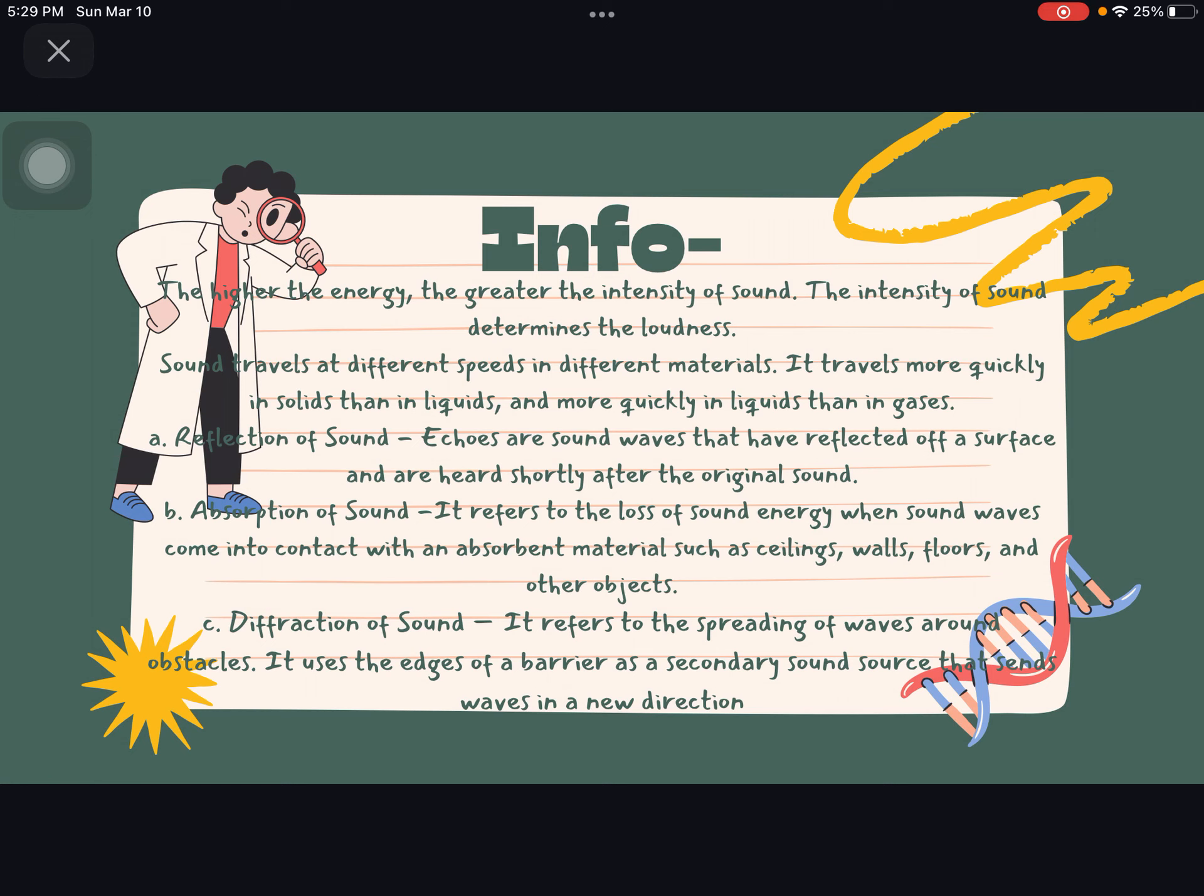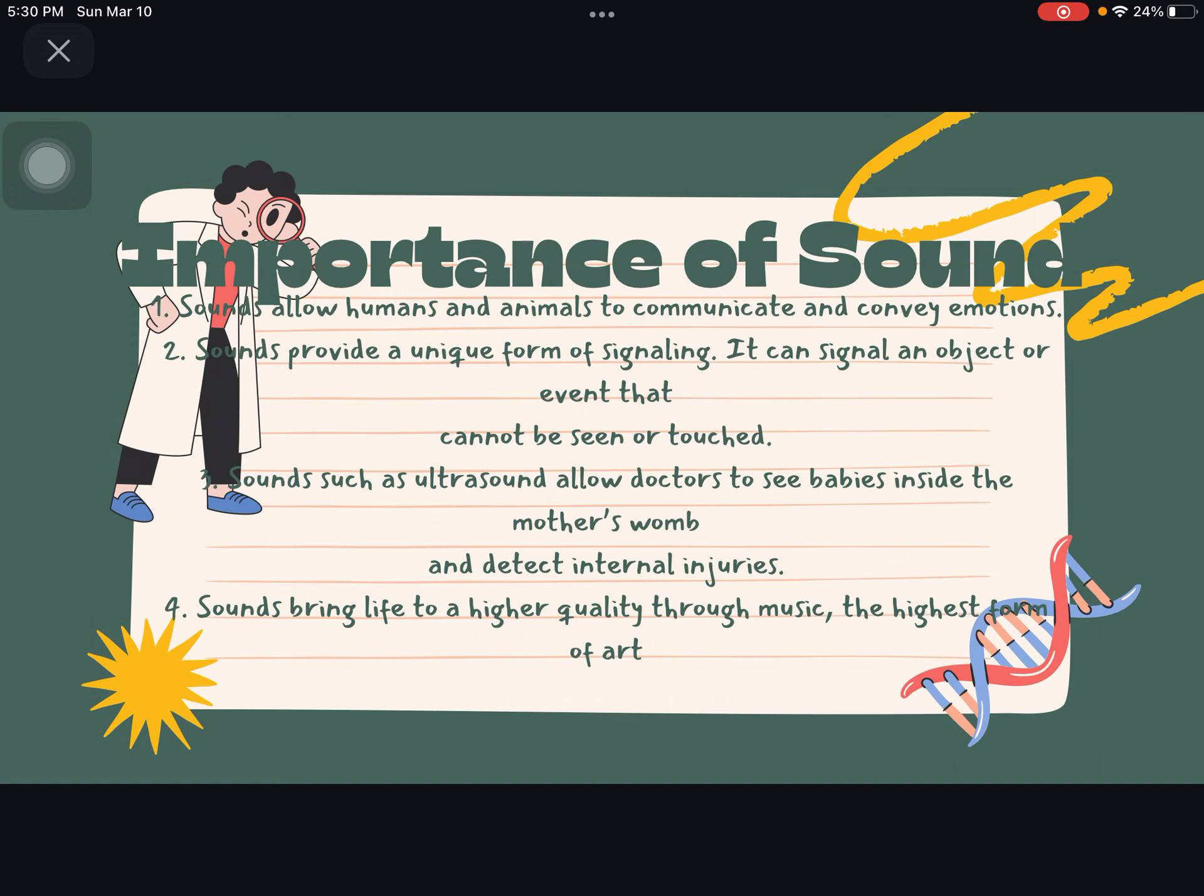C. Diffraction of sound. It refers to the spreading of waves around obstacles. It uses the edges of a barrier as a secondary sound source that sends waves in a new direction.